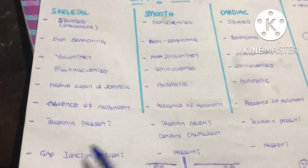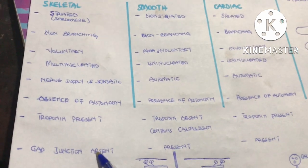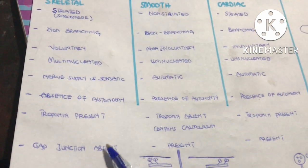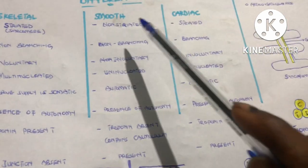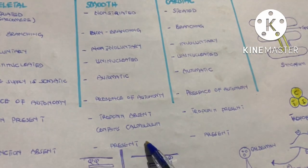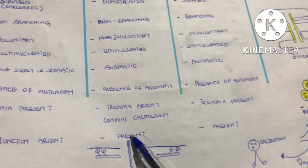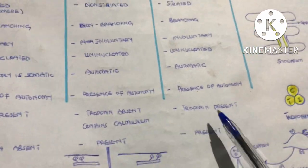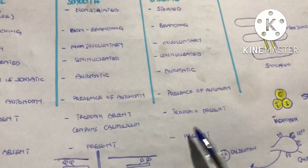In skeletal muscle, gap junctions are absent. But in smooth muscle and cardiac muscle, gap junctions are present.